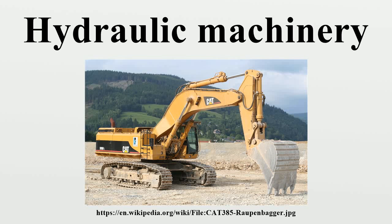Hydraulic machines are machinery and tools that use liquid fluid power to do simple work. Heavy equipment is a common example. In this type of machine, hydraulic fluid is transmitted throughout the machine to various hydraulic motors and hydraulic cylinders and becomes pressurized according to the resistance present. The fluid is controlled directly or automatically by control valves and distributed through hoses and tubes. The popularity of hydraulic machinery is due to the very large amount of power that can be transferred through small tubes and flexible hoses, and the high power density and wide array of actuators that can make use of this power.